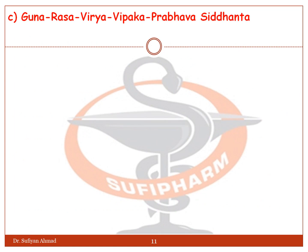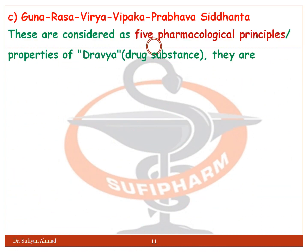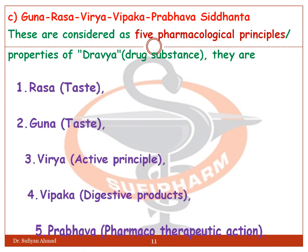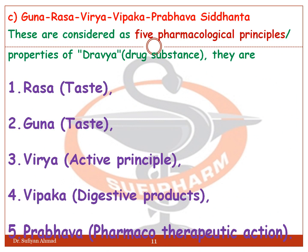Next is the Guna, Rasa, Virya, Vipaka, Prabhava Siddhanta. These are considered the five pharmacological principle properties of Dravya, means drug substance. They are: Rasa means taste, Guna means physical property, Virya means active principle, Vipaka means digestive product, and Prabhava means pharmacotherapeutic action.